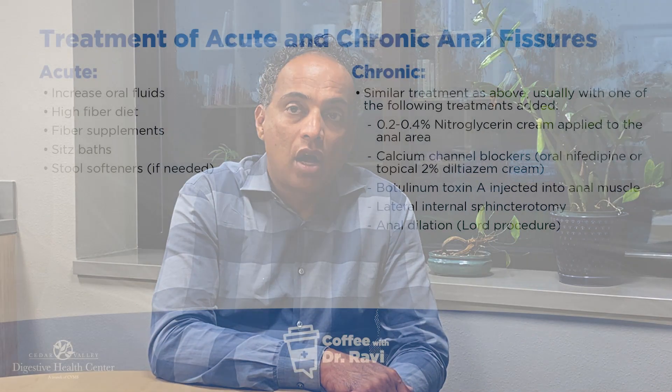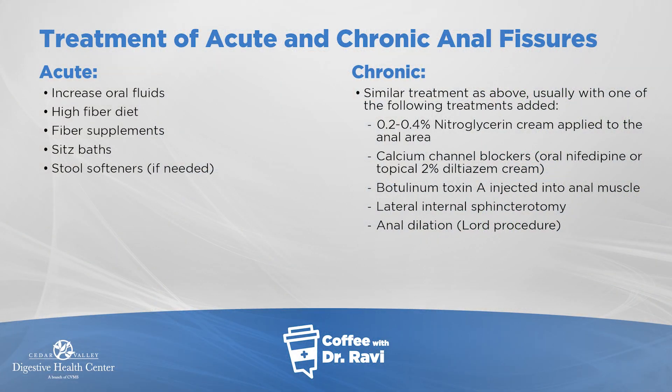The key to treatment is to keep stool soft through a combination of drinking more water and getting more fiber from plant-based foods. Sometimes we add Metamucil or Citrucel, which are over-the-counter fiber supplements. In general, a diet high in fiber and water is helpful. Sitz baths can also be helpful instead of wiping hard on the area while trying to get it to heal.